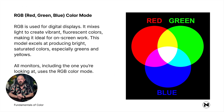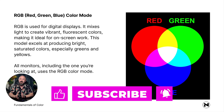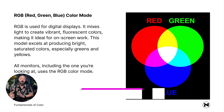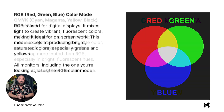First, let's look at RGB, which stands for red, green, and blue. RGB is used for digital displays — it mixes light to create vibrant fluorescent colors, making it ideal for on-screen work. This mode excels at producing bright, saturated colors, especially greens and yellows. All monitors, including the one you're looking at, use the RGB color mode.